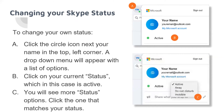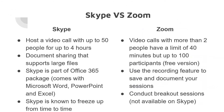To change your Skype status, you can change your name or email address. Click the circle icon next to your name in the top left corner — a dropdown menu will appear with a list of options. Click on your current status, which in this case is Active. You will see more status options; click the one that matches your current status.